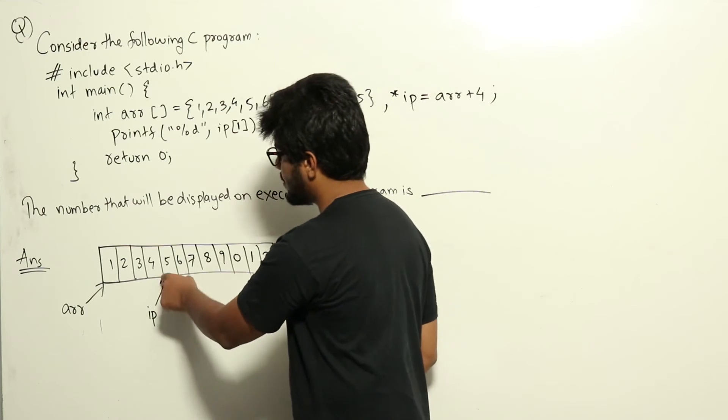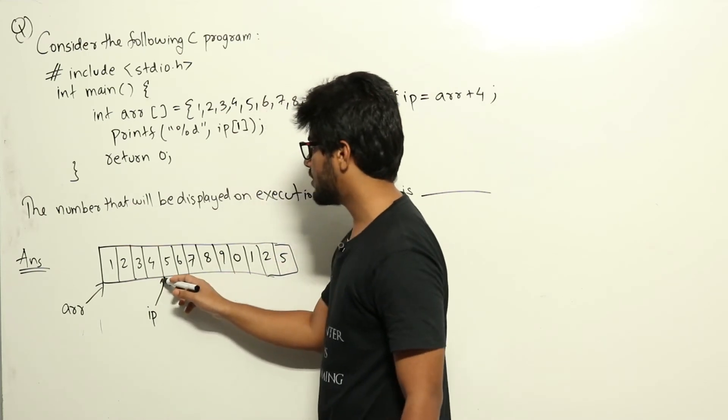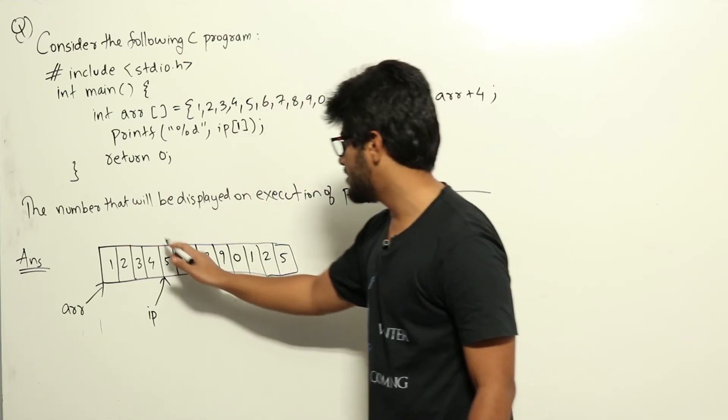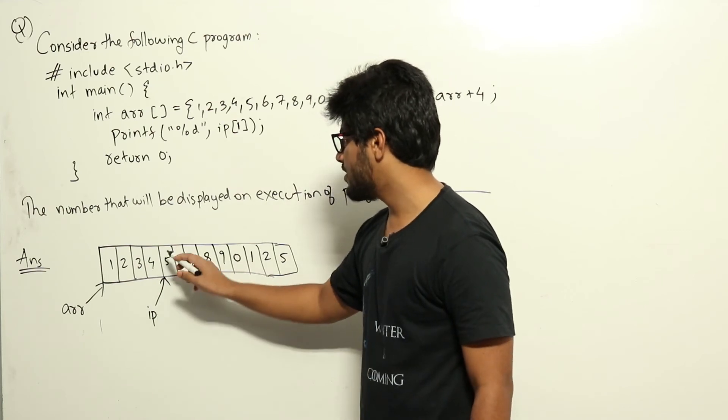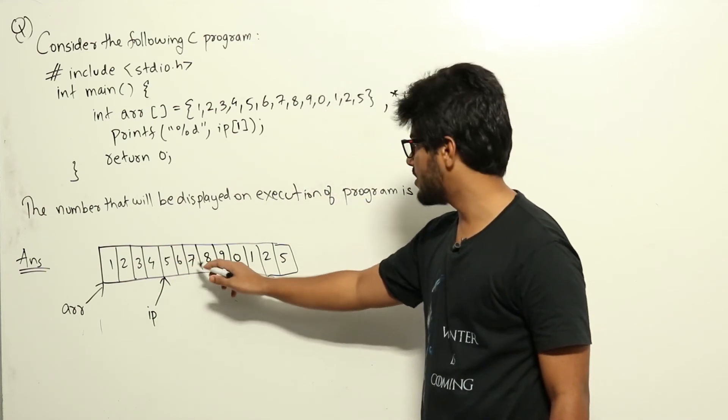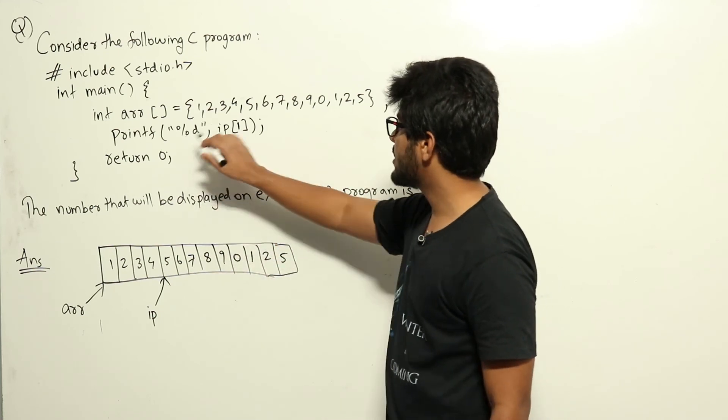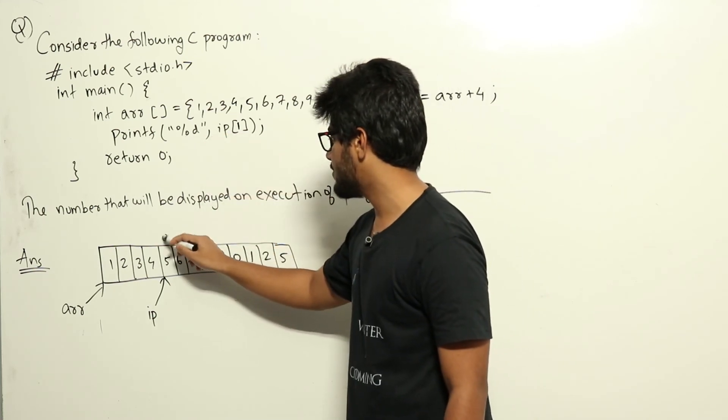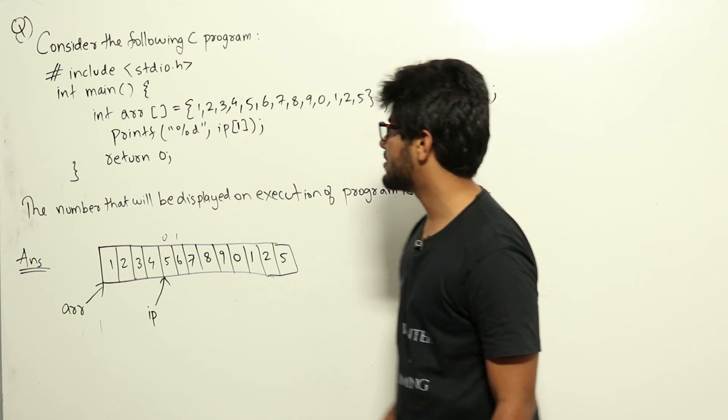IP will be same as this, meaning IP is pointing to the start of this array at this point. IP[0] will display 5, IP[1] will display 6, IP[2] will display 7, etc. Here we are printing IP[1], that is this is IP[0], this is IP[1], that is 6.